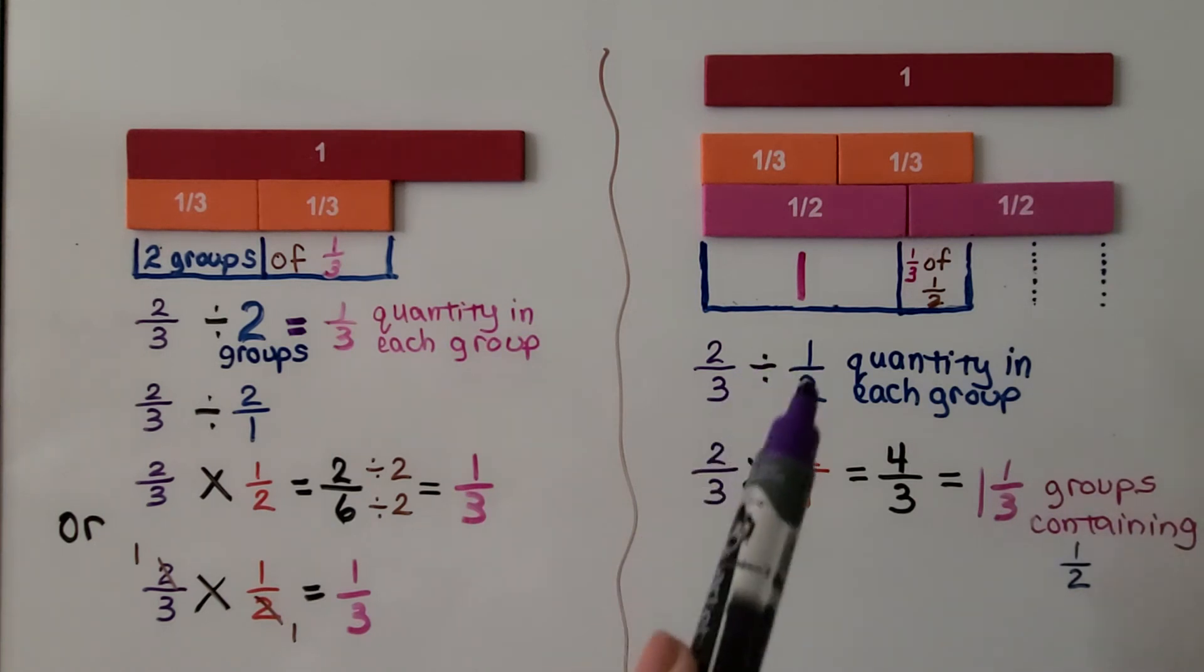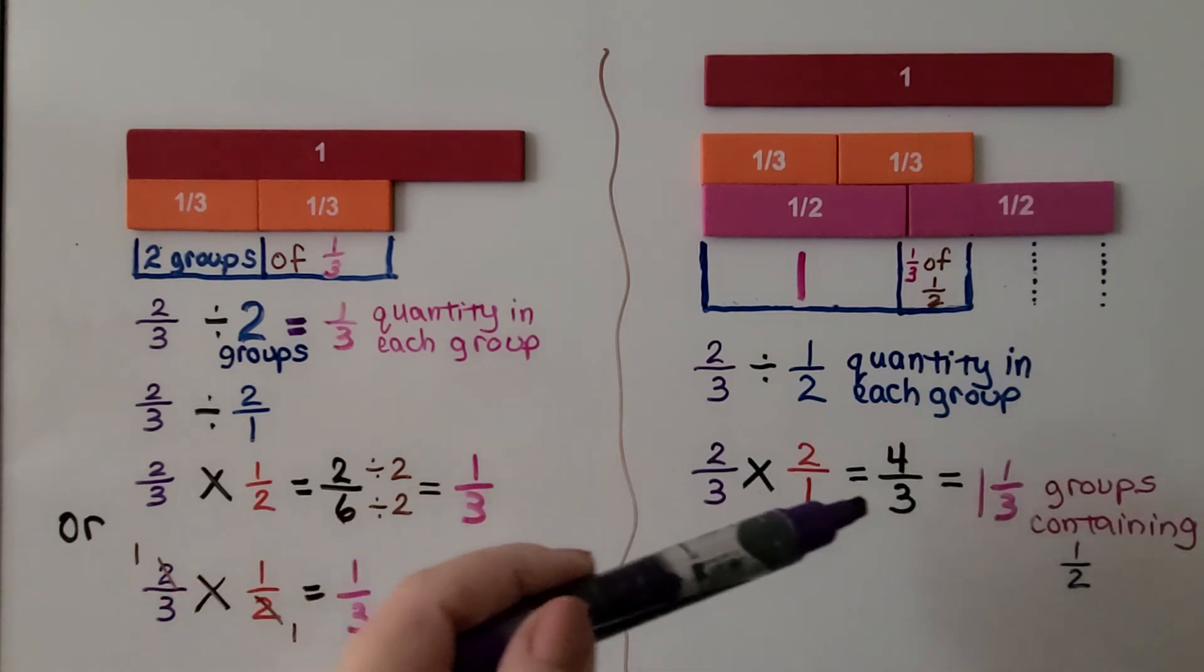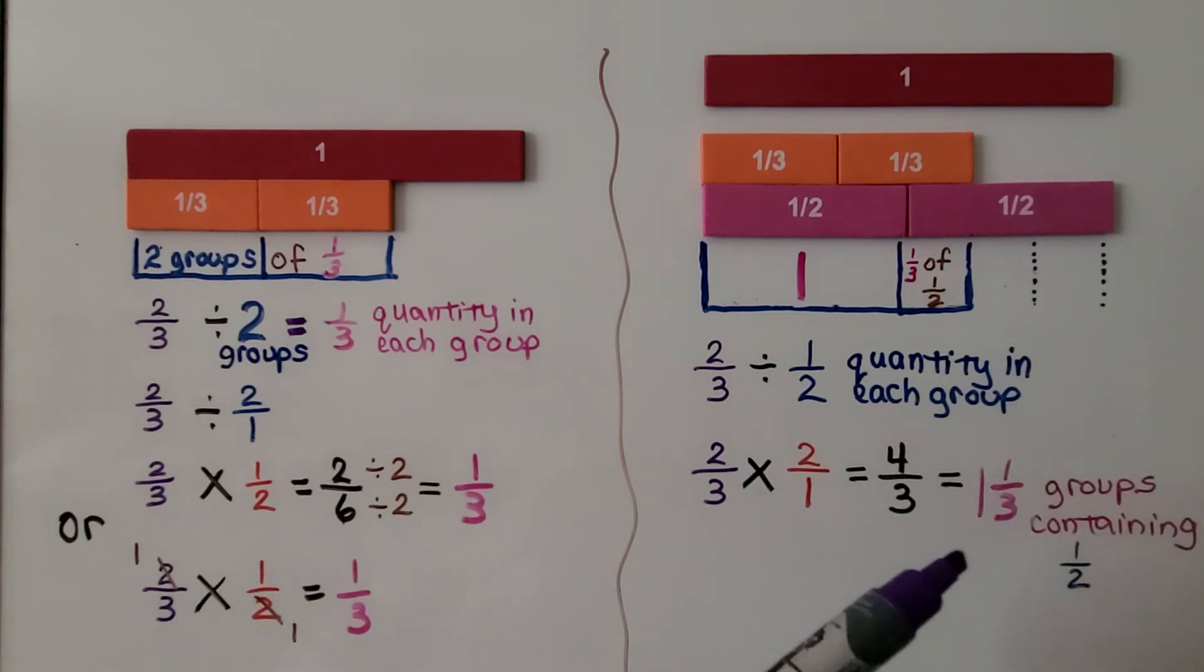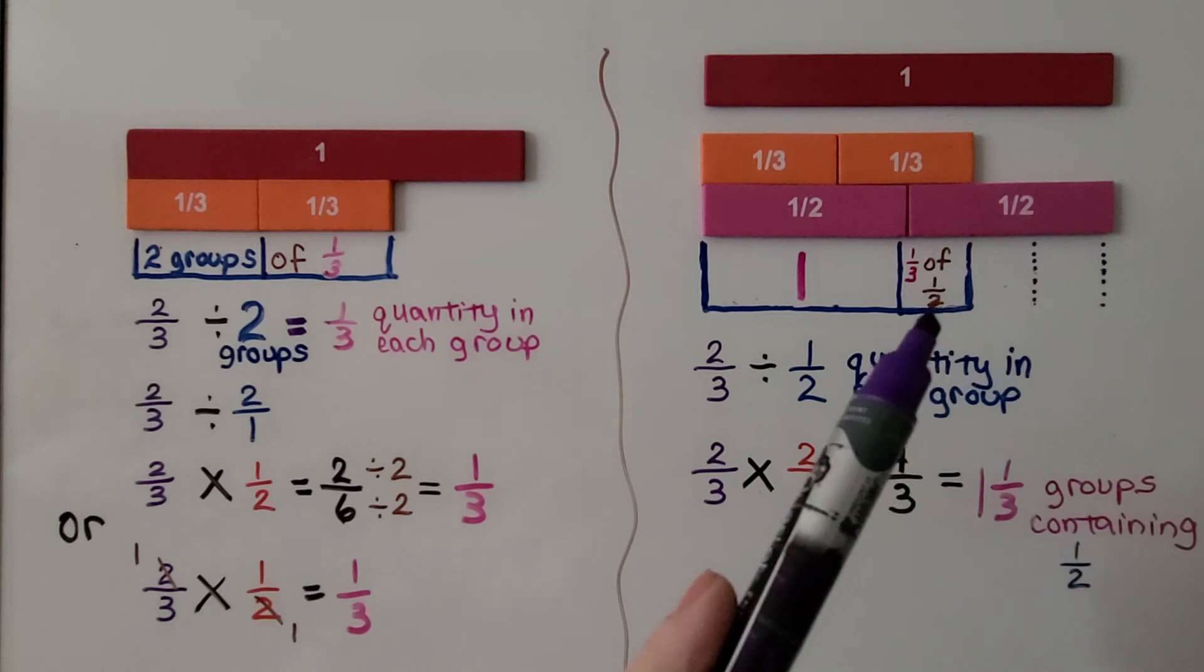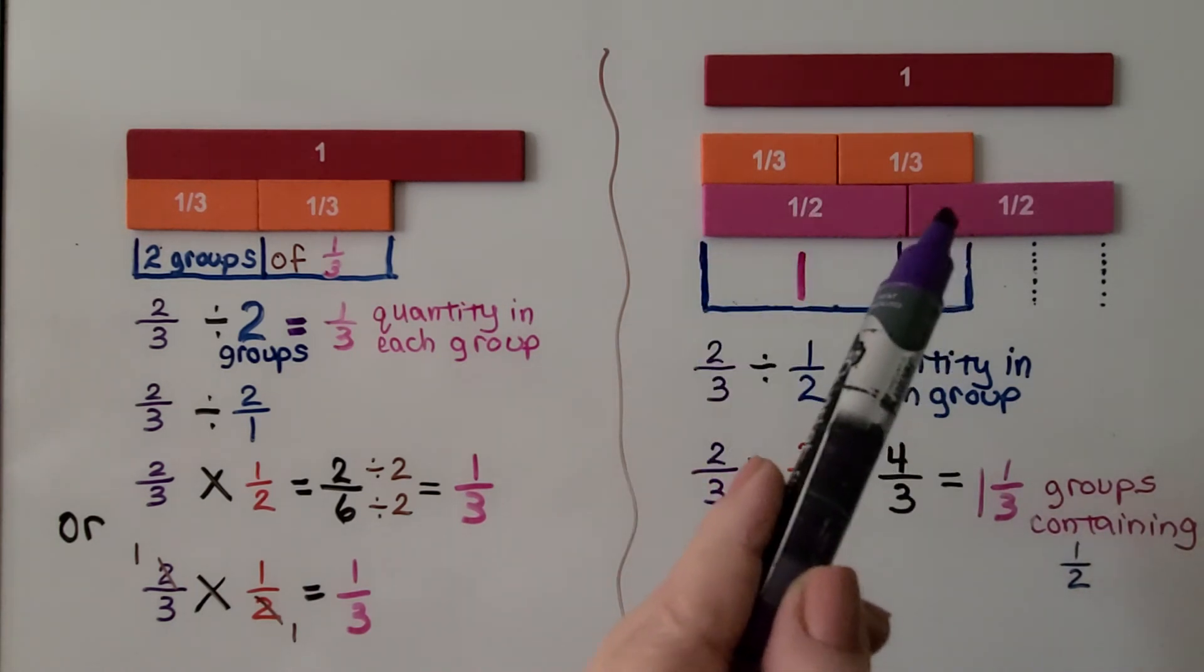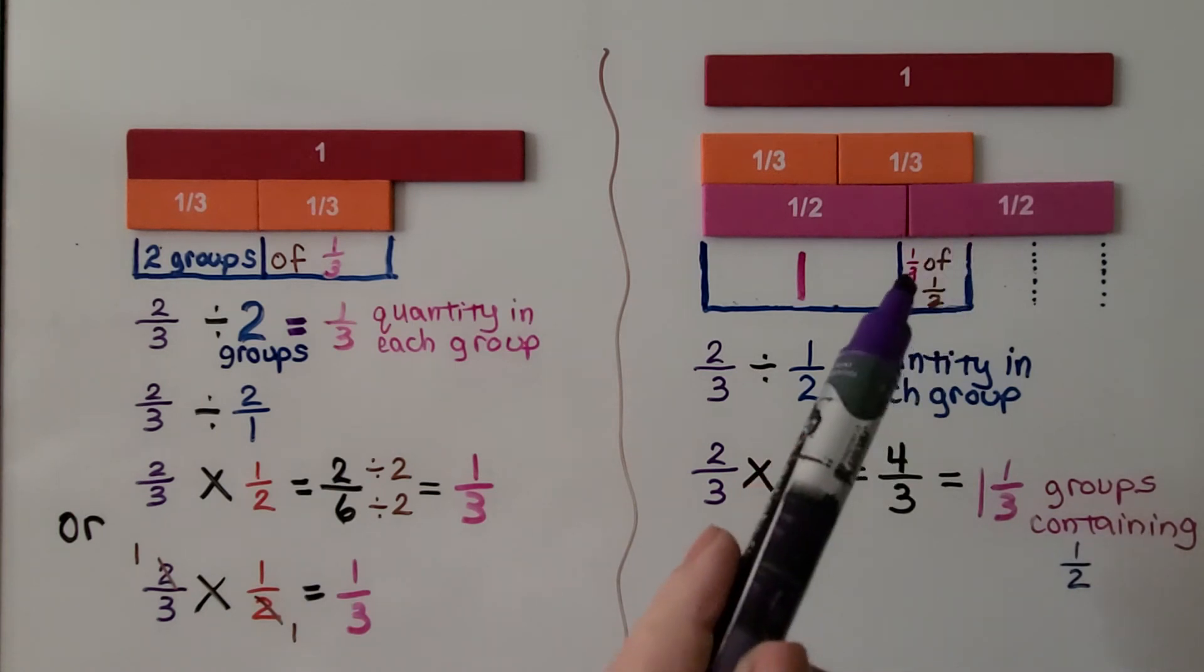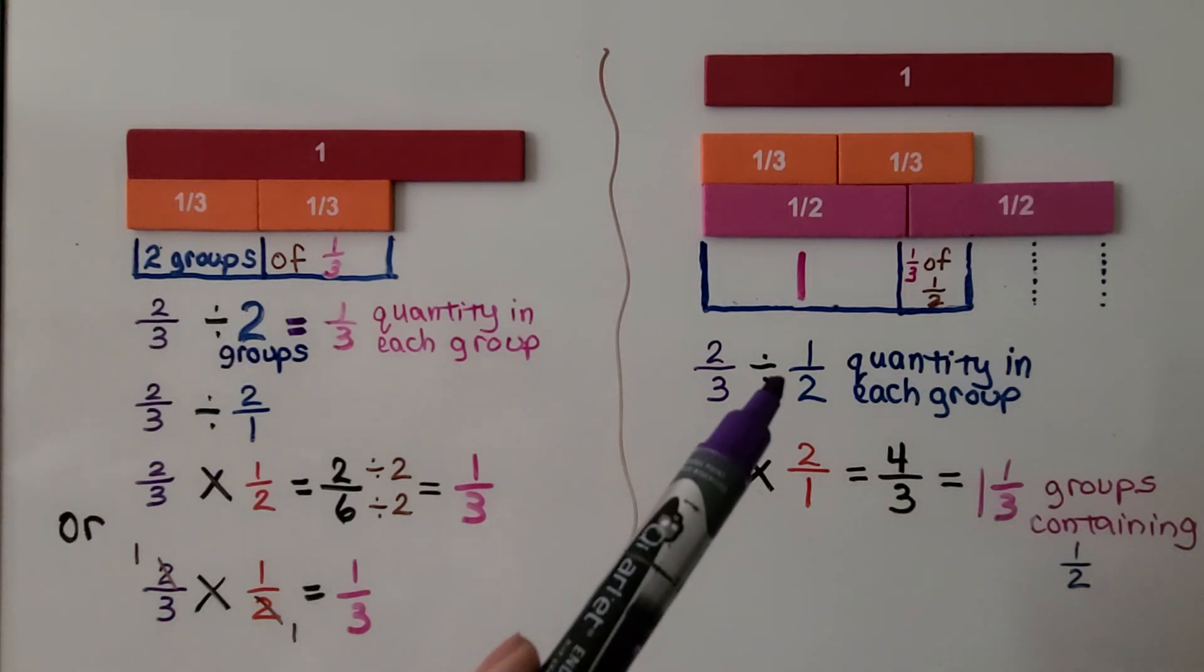We're doing ⅔ divided by ½. We flip to its reciprocal and multiply: 2×2 is 4, 3×1 is 3. We have 4/3, which is 1⅓ groups containing ½. We don't even have two full groups. So, there's a big difference between dividing by 2 and dividing by ½.